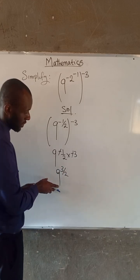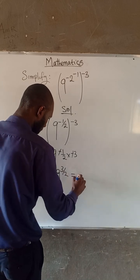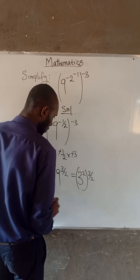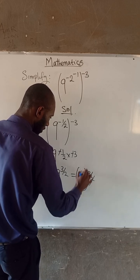But we can still simplify further. 9 can be expressed as 3 squared and this is 3 divided by 2. So the 2s cancel.